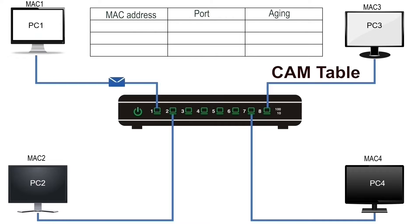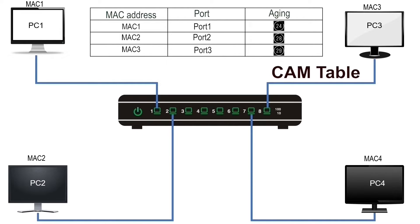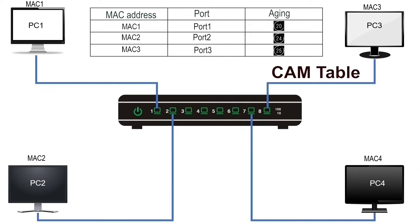In the MAC address field, the switch saves the MAC address from the frame's source field. In the port field, it saves the port information on which the switch received the frame. In the aging field, it saves a timer. It assigns a separate timer to each entry of the CAM table. This timer is used to age out old entries from the CAM table, allowing room to store new entries.